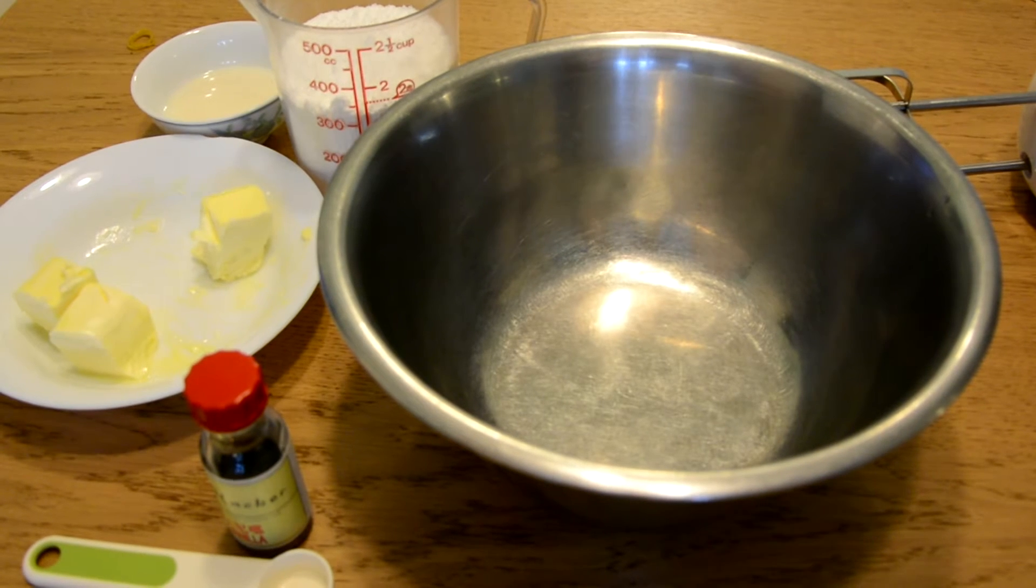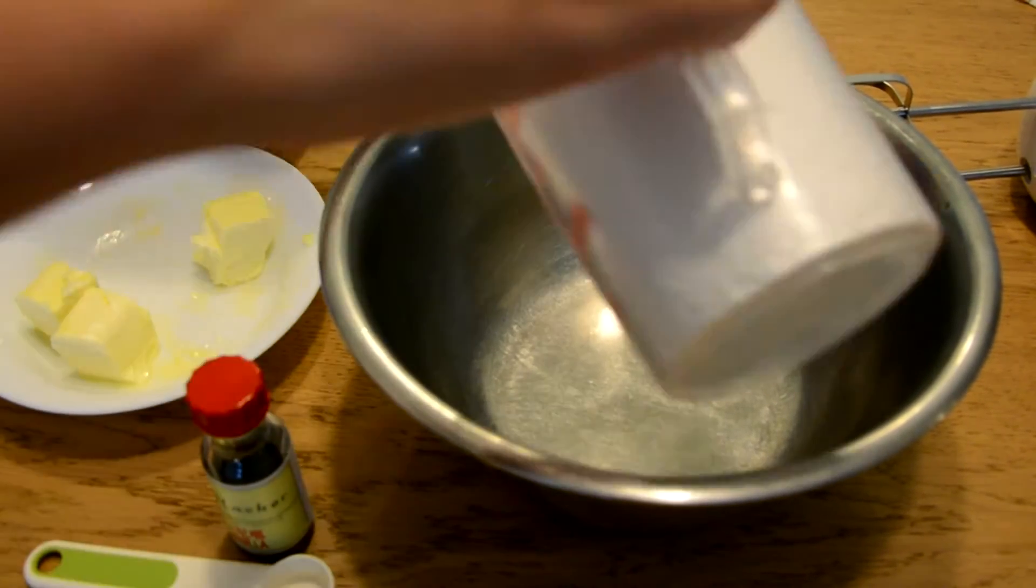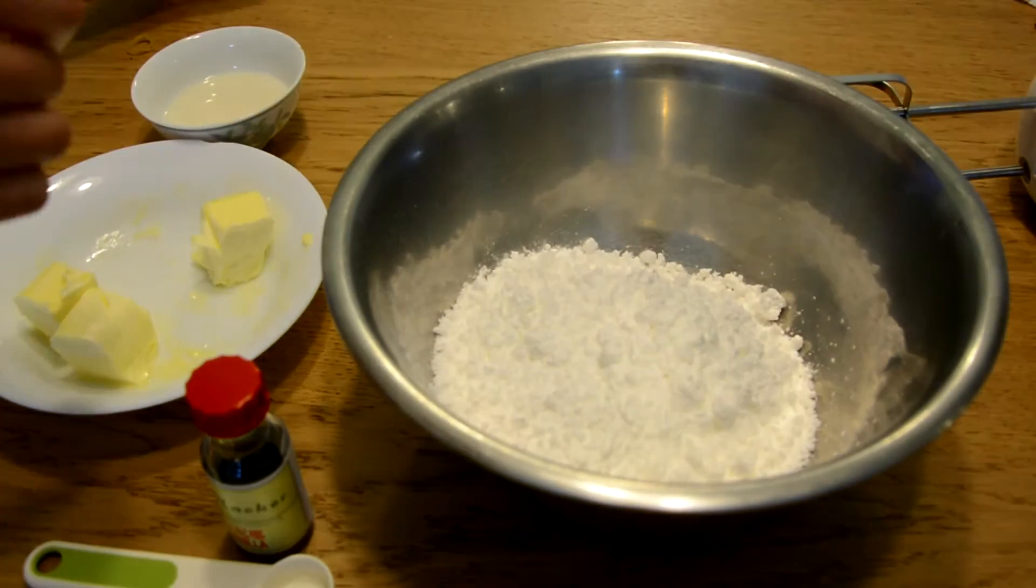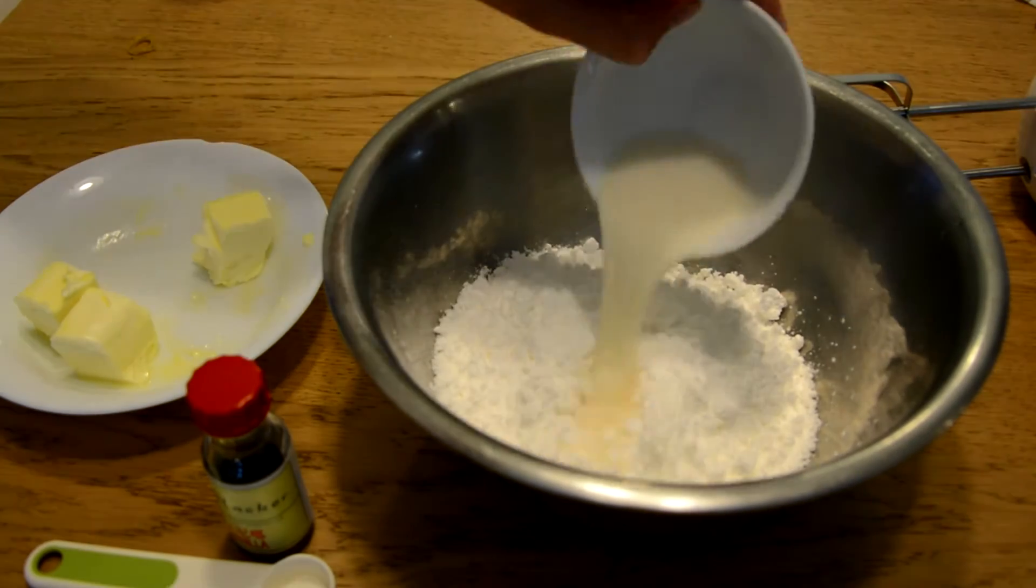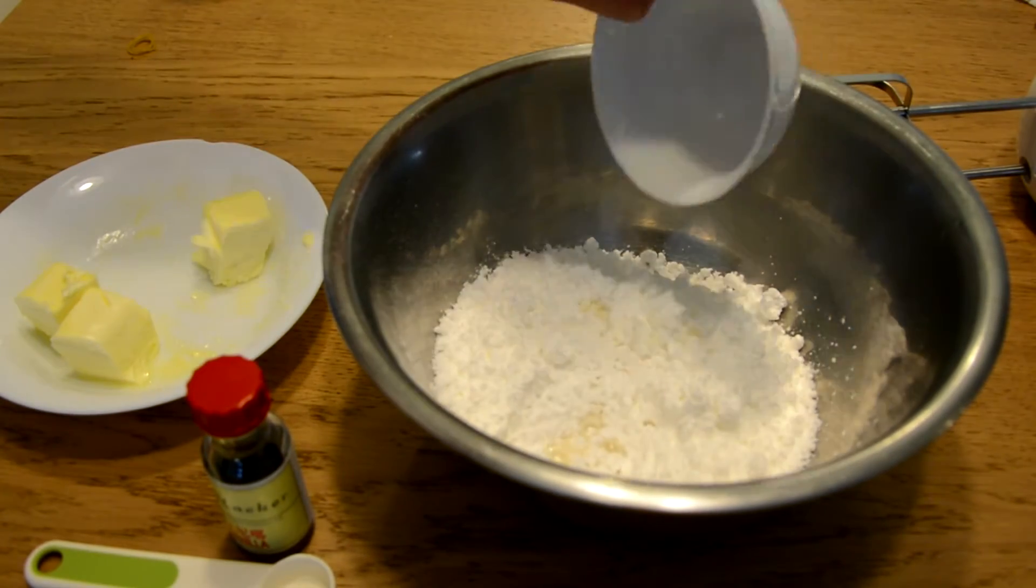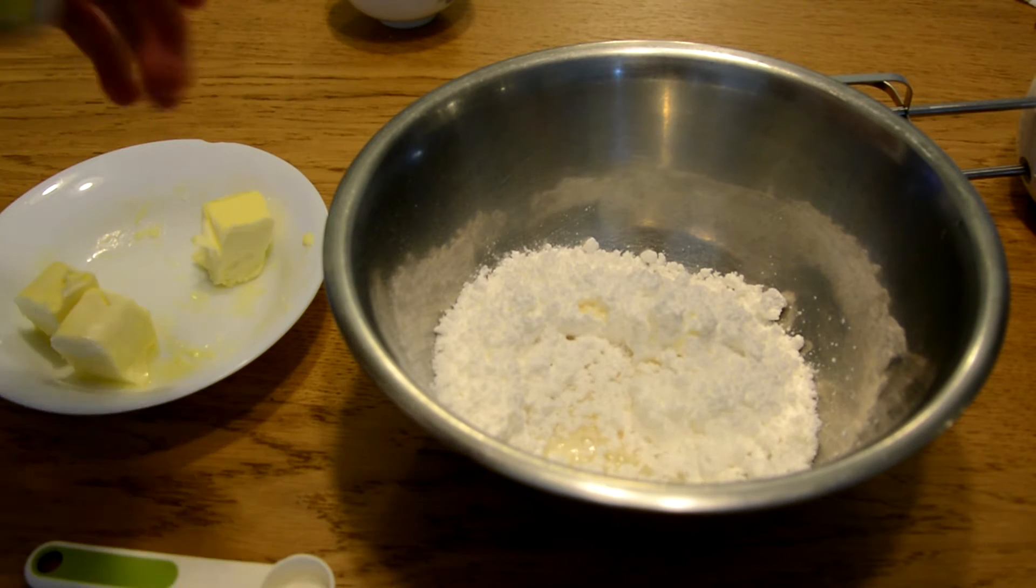Then you want to chill the crust until it's firm. For the filling, in a medium mixing bowl, you want to combine the powdered sugar, half cup of softened butter, milk, and vanilla.